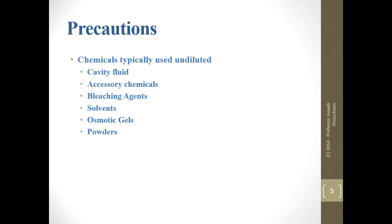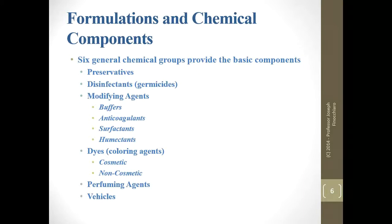Chemicals typically used undiluted in our profession include cavity fluid, cavity preservative, accessory chemicals, bleaching agents, solvents, osmotic gels, and powders. Six general chemical groups provide the basic components of embalming chemicals: preservatives, disinfectants or germicides, modifying agents — which modify the effect of the preservative — and generally fall into supplemental chemicals: buffers, anticoagulants, surfactants, and humectants.